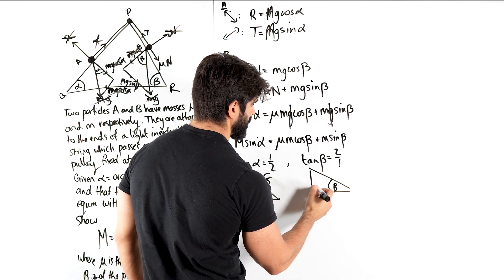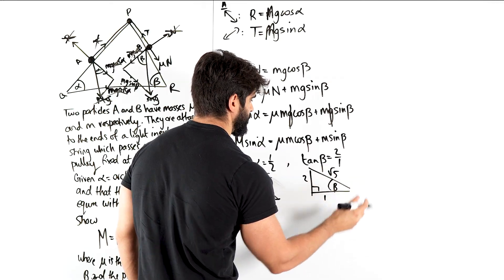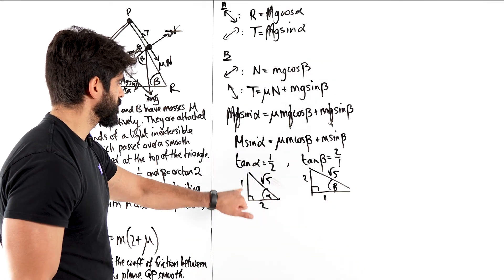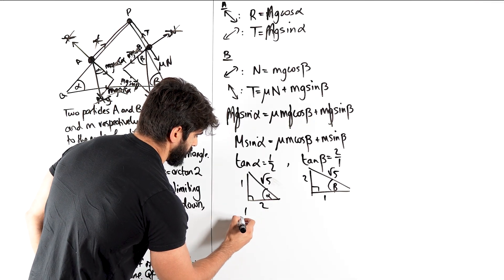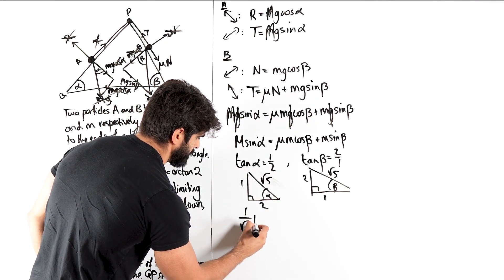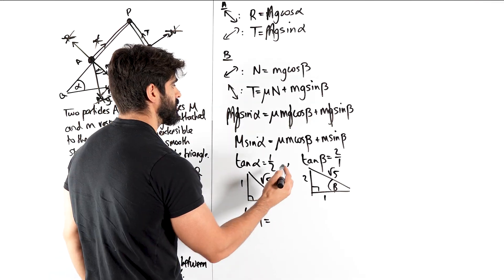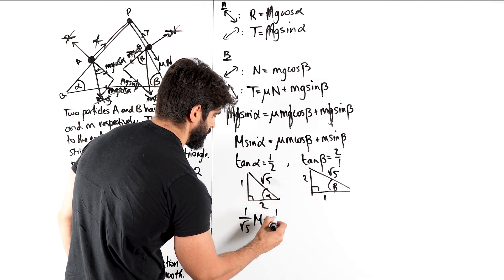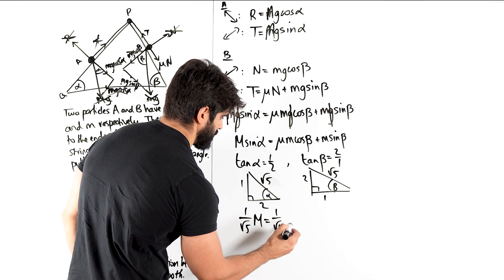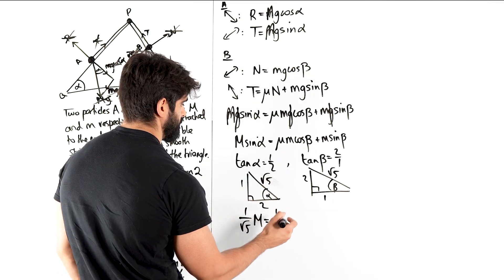Then with this one, we have 2, 1 root 5. So from here sin alpha is 1 over root 5. So we have 1 over root 5, M, cos beta is 1 over root 5. Yeah, 1 over root 5, mu M.